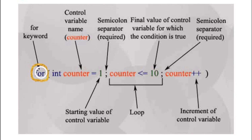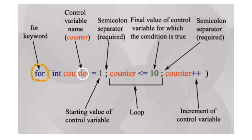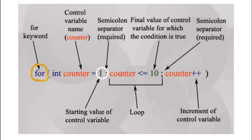Let's understand the for loop with the help of an example. It starts with the 'for' keyword, then inside the parentheses three types of information are written: part one, separated by semicolon, then part two, separated by semicolon, and the final third part. The variable initialized in part one is called the control variable, as it controls the execution of the for loop. In this example, the control variable is named 'counter', with data type int. 'int counter = 1' — this is the initialized starting value.